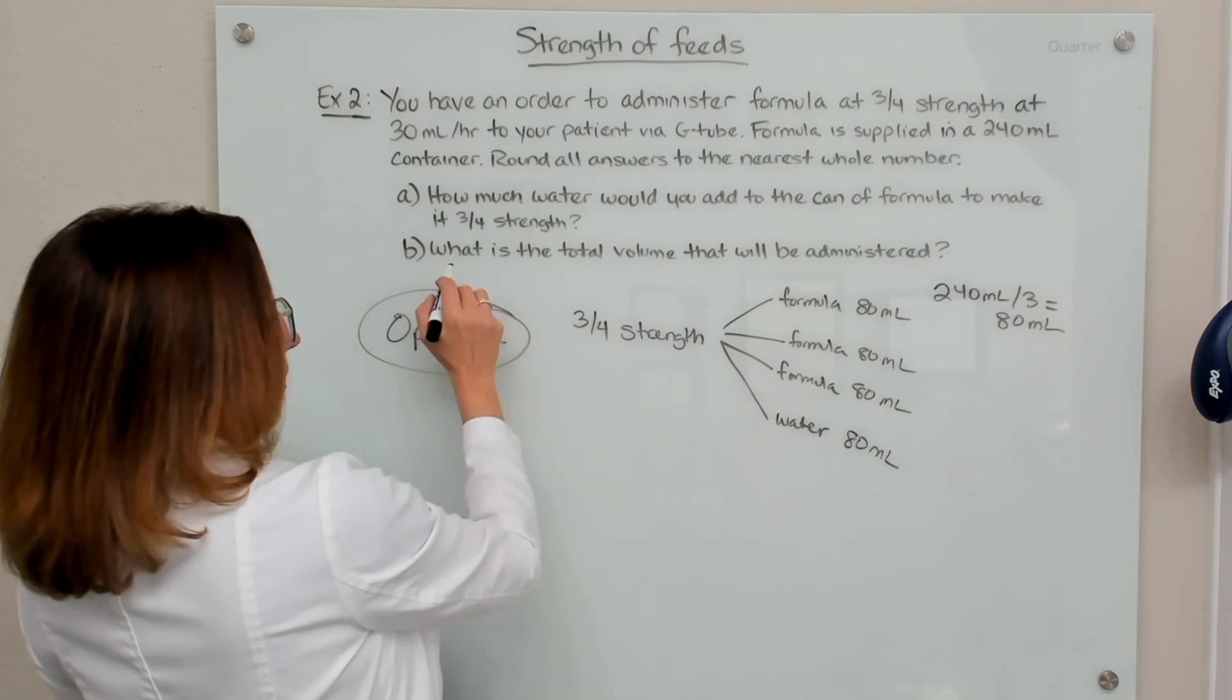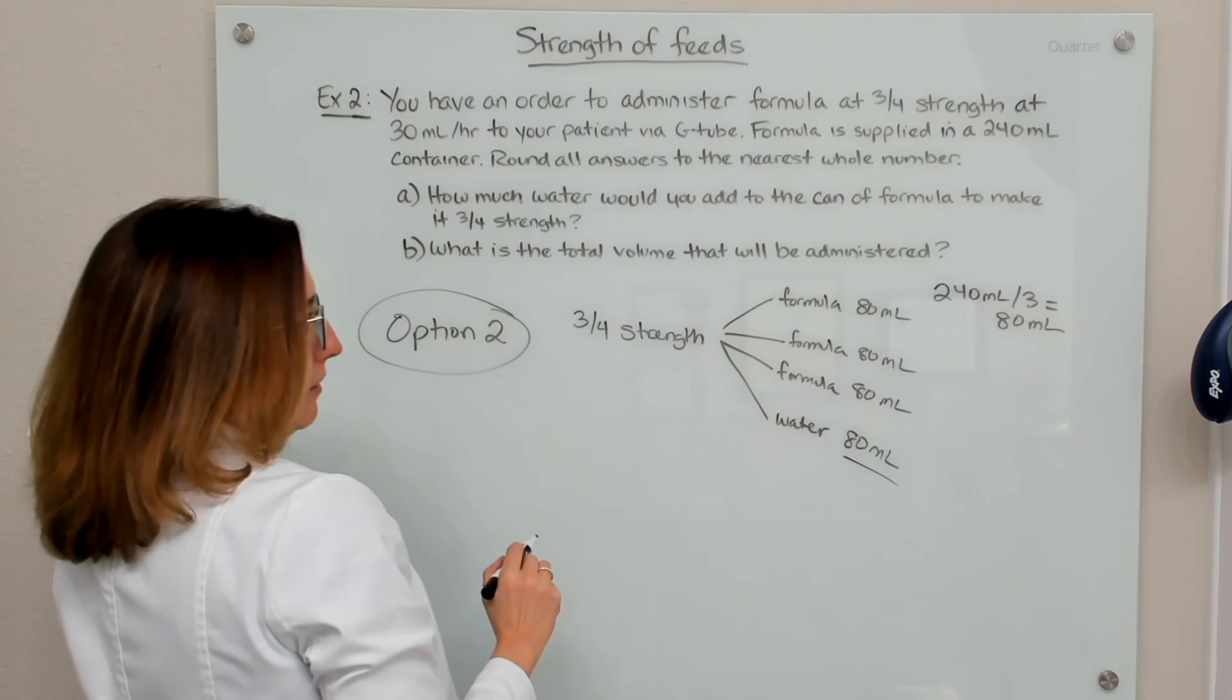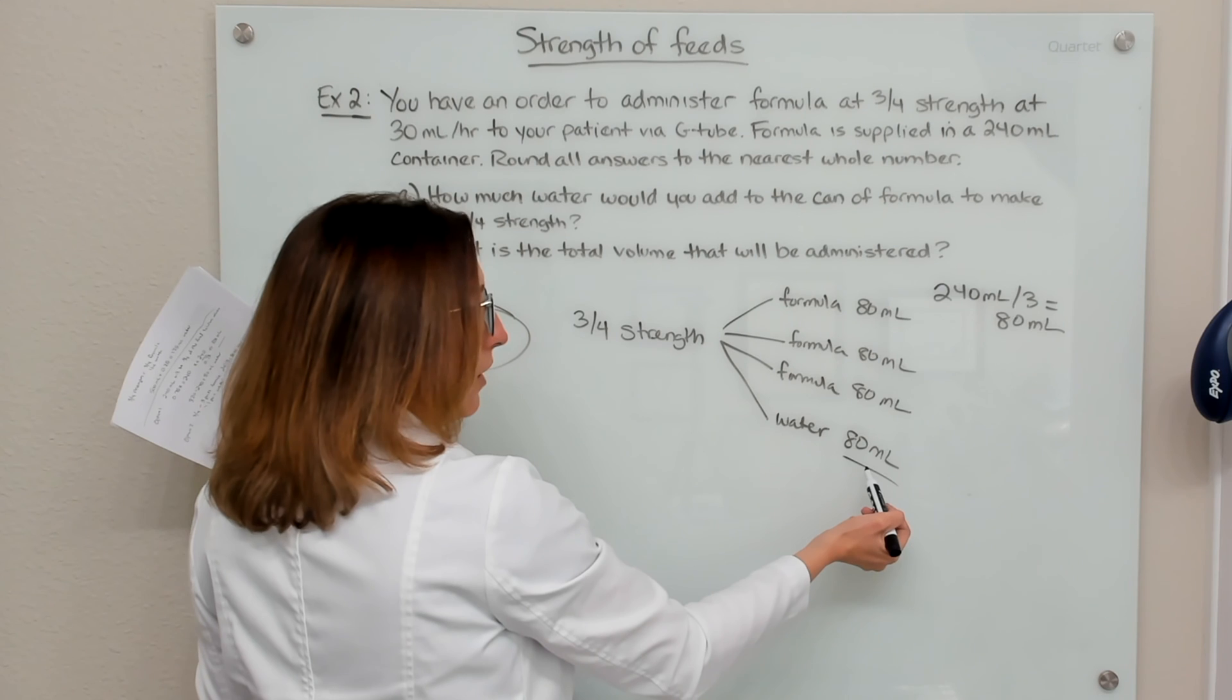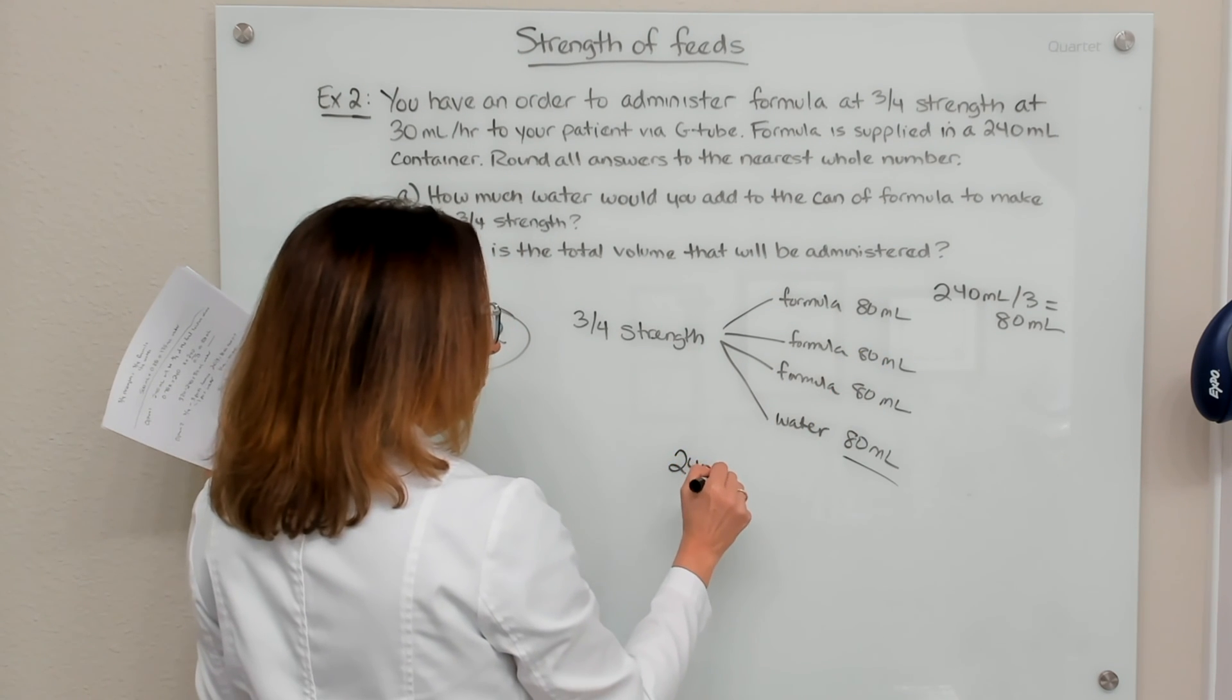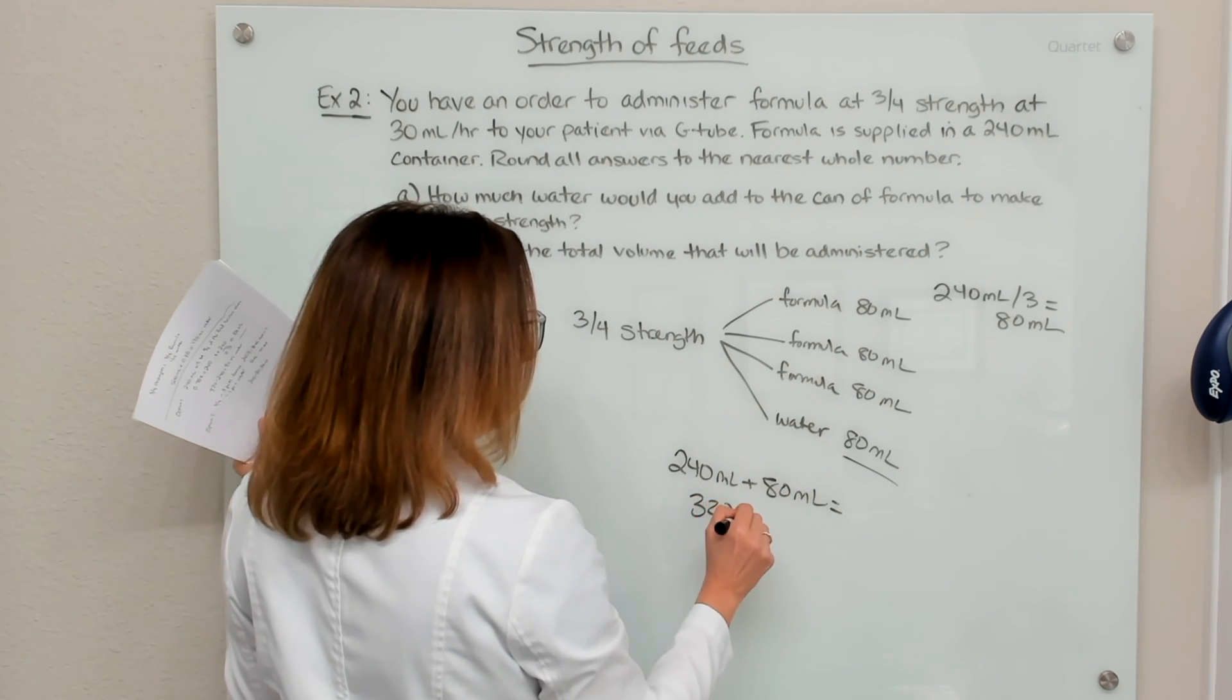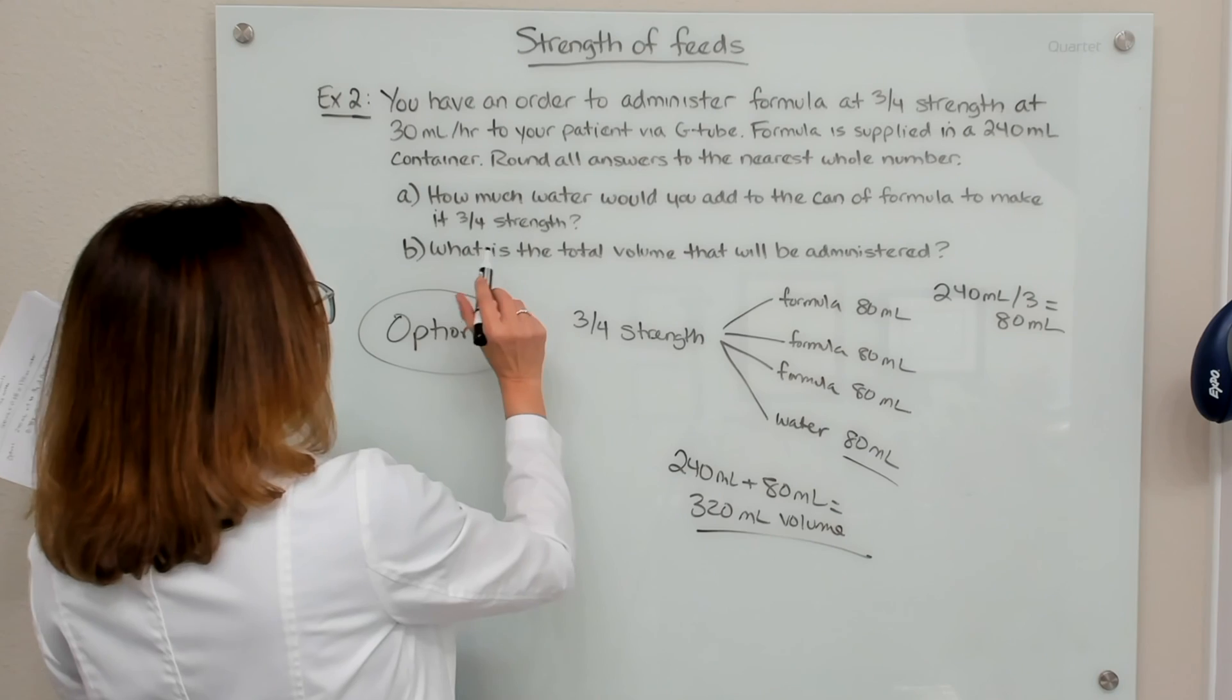So if you look at our questions, how much water would you add to make it three quarters strength, you're going to add 80 ml. And then what is the total volume that will be administered, we just have to add up these volumes, right? So we add up the 240 milliliters of formula, plus that 80 ml of water, and we get 320 ml total volume. So that would be the answer to part B.